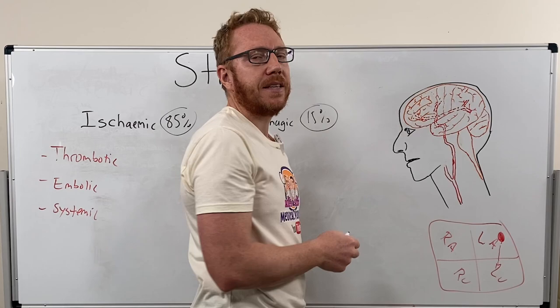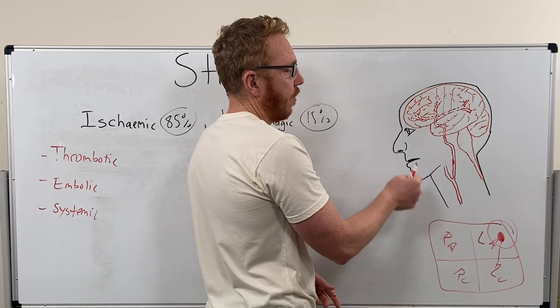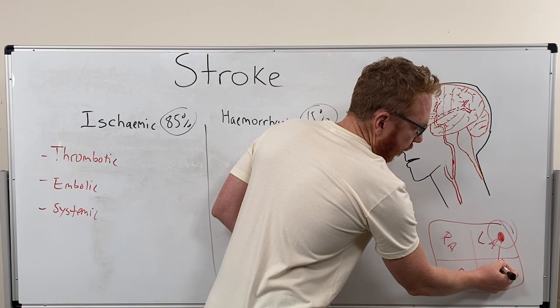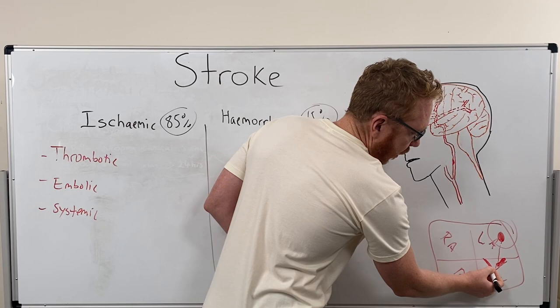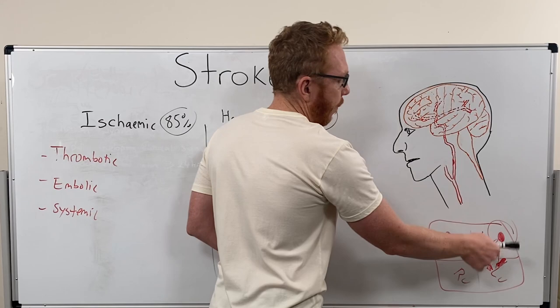So atrial fibrillation is quite common as a cause of embolic ischemic stroke. Another cause would be valve growths — for instance on the mitral valve — that break off, travel up through the aorta and carotid, and get stuck.